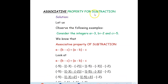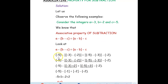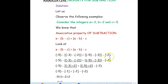Now we will see the associative property for subtraction of integers. The rule is (A − B) − C = A − (B − C). Consider a = negative 5, b = negative 3, c = negative 2. We will substitute the values into the associative property of subtraction equation.